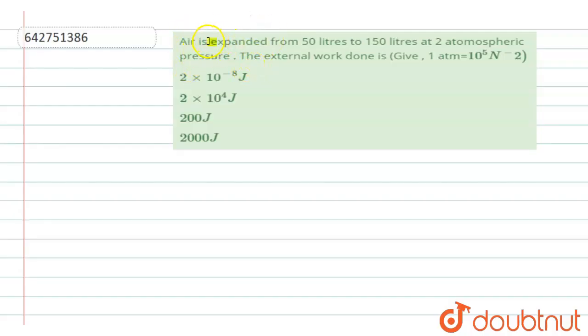Hello everyone. In this question, air is expanded from 50 liter to 150 liter at two atmospheric pressure. So what is the external work done here? We have to calculate. And it is also given in the question that one atmosphere is